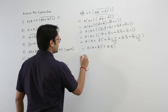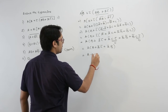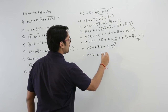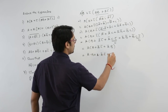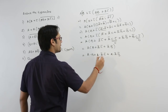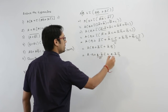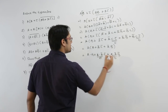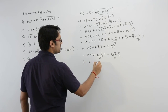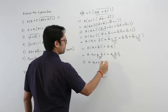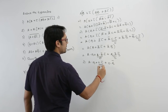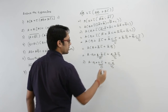This can be written as A dot B, plus A dot A complement C complement, plus A dot A complement B complement. Since A dot A complement equals 0, we get A dot B plus 0 dot C complement plus 0 dot B complement. Both those terms are 0.